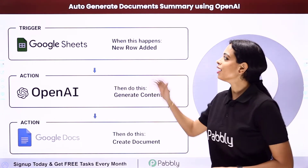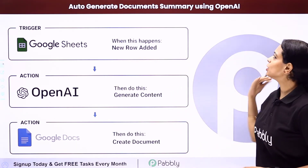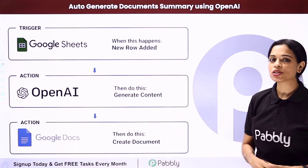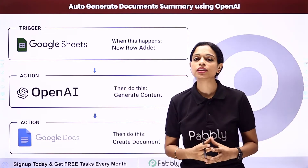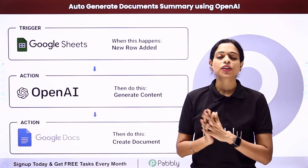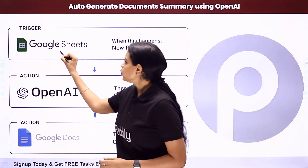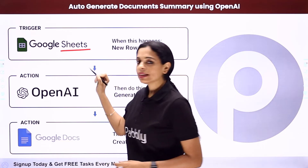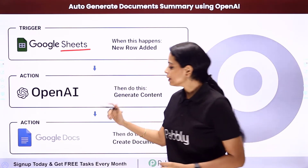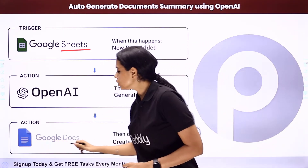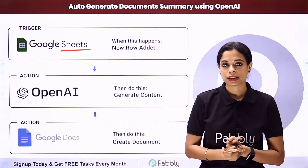In this video, we are going to see how to auto-generate a document summary using OpenAI. So let's say that you have got some content on your Google Sheet like a paragraph and you want it to be summarized and then saved to a Google document after creation of a new document.